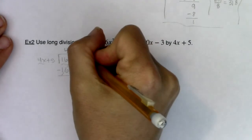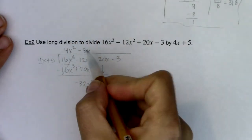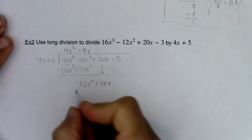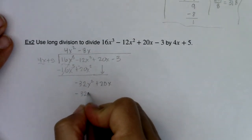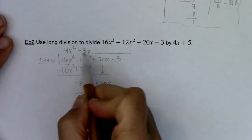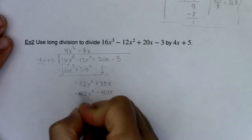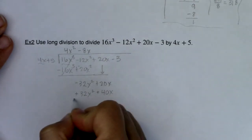4x, if I want to get it to negative 32x squared, I think I need a negative 8x. Let's multiply monomial to binomial. I've got negative 32x squared, 5 times negative 8x is negative 40x. I'm going to subtract that binomial, so I'm going to change the signs.